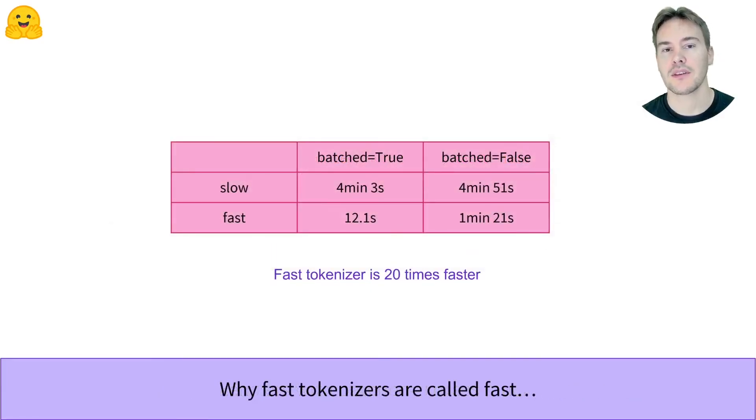Summarizing the results in this table, you can see why we have called those tokenizers fast. And this is only for tokenizing texts. If you ever need to train a new tokenizer, they do this very quickly too.